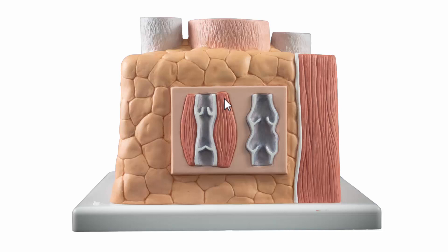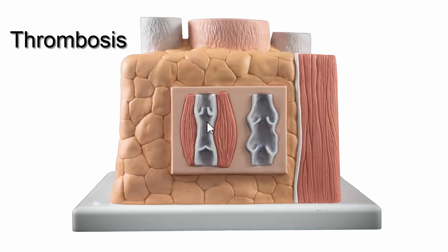When you sit for a long period of time, blood can pool in these vessels, and that's not good because pooled blood tends to clot. A clot that is stuck to the wall of the vessel is called a thrombosis. If it breaks loose, we call that an embolus, and we run the risk of it traveling to the lungs, causing serious damage — if it's large enough it can even cause death.